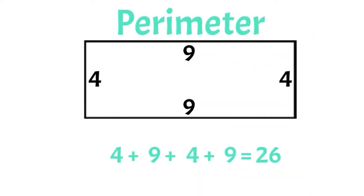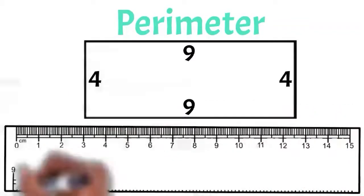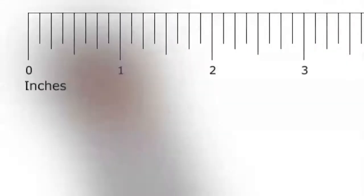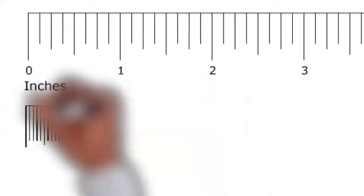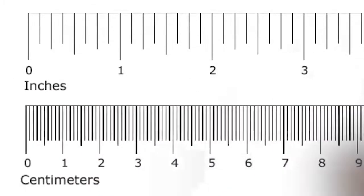Sometimes we are given the side lengths, but sometimes we have to measure them with a ruler. You will most likely be asked to measure with inches or centimeters. Either way, the most important thing to remember when measuring is to start measuring at zero. Then the number where your object ends is the length of your object.